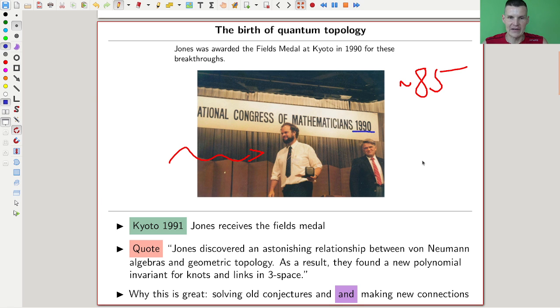So Vaughan Jones, very happily, apparently walks away with the Fields Medal. The quote for why Jones got the Fields Medal is: Jones discovered an astonishing relationship between von Neumann algebras and geometric topology. I'd like to highlight this word 'astonishing' because this is essentially why we like quantum topology—because of relationships, because of building bridges.